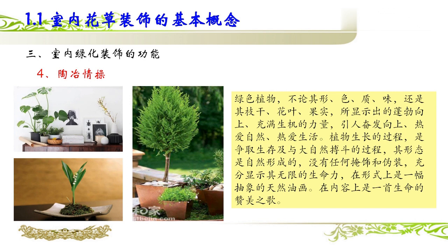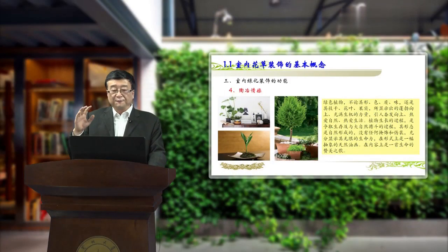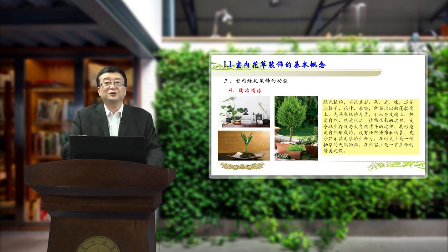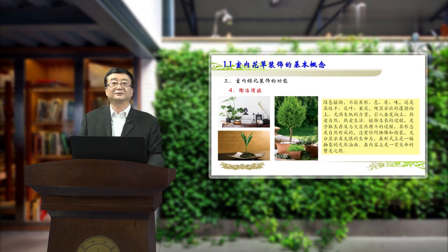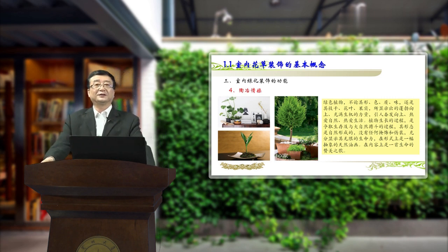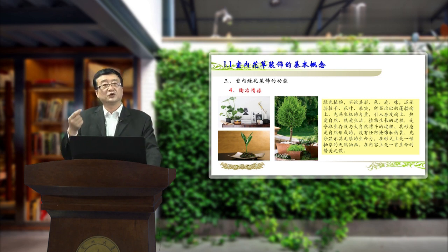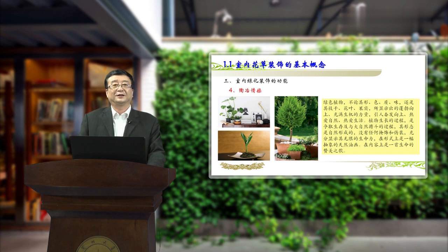室内绿化装饰的第四个功能就是陶冶情操。绿色植物不论其形、色、质、味，还是花叶、果实所显示出的蓬勃向上、充满生机的力量，引人奋发向上、热爱自然、热爱生活。植物生长的过程是争取生存、与大自然搏斗的过程，其形态是自然形成的，没有任何掩饰和伪装，充分显示其无限的生命力。花草盆景之美，与其说是一种造型美，倒不如说是一种生命之美。